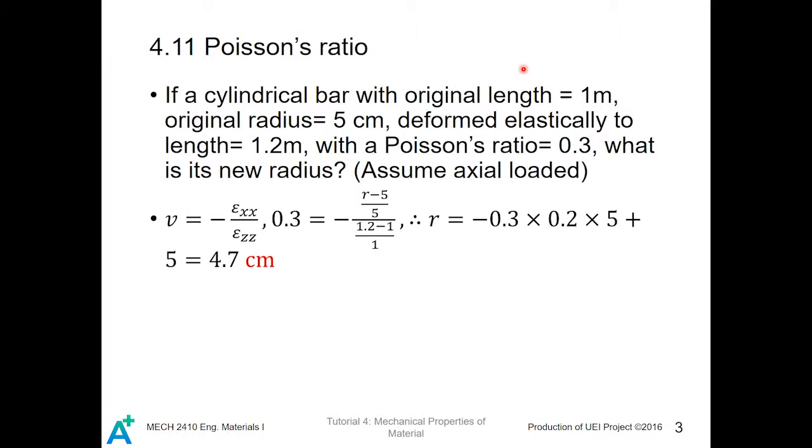Using the definition for Poisson's ratio, we first identify what is the axial direction and what is the transverse direction, or what is the axial length and what is the transverse length. The original axial length is equal to 1 meter according to the assumption of axial loading, and the new length is 1.2 meter.